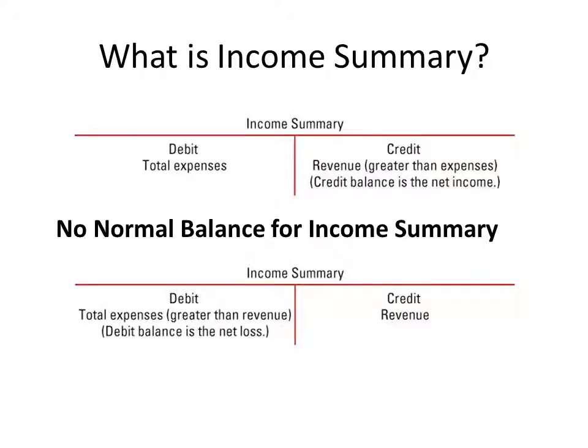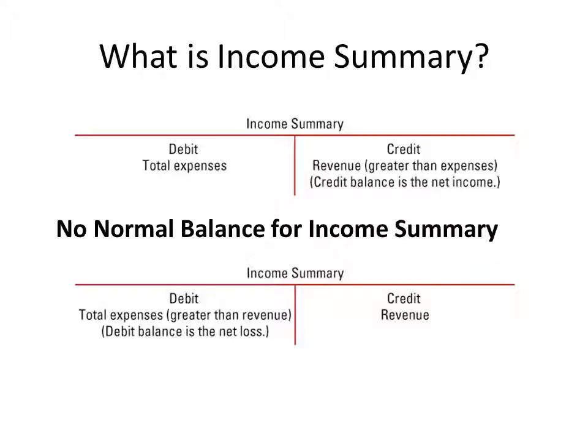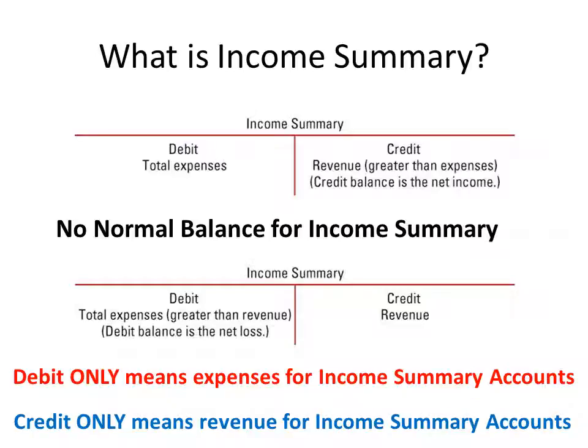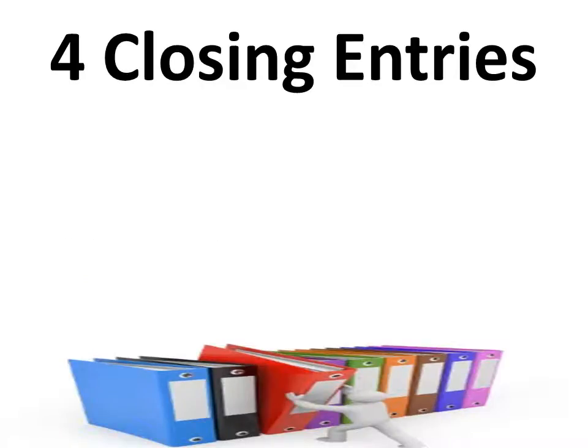Income summary is funny because there is no normal balance for income summary. Debits are where your expenses go and credits are where your revenue goes — that's going to help us close back into capital. Debit only means expenses for income summary accounts and credit only means revenue for income summary accounts. All other accounts: debit means left, credit means right.